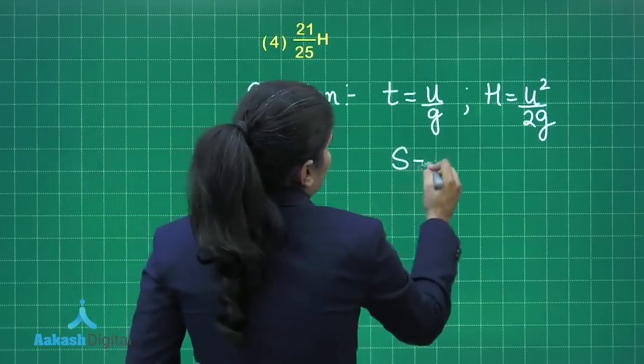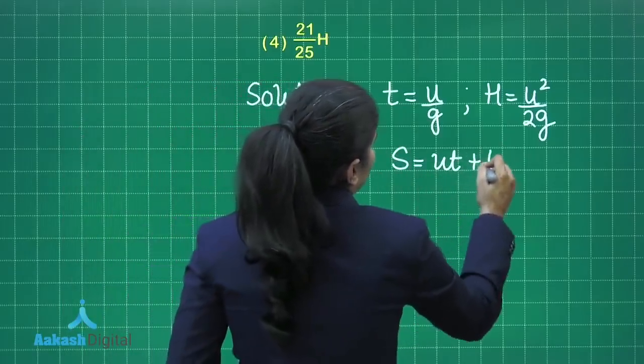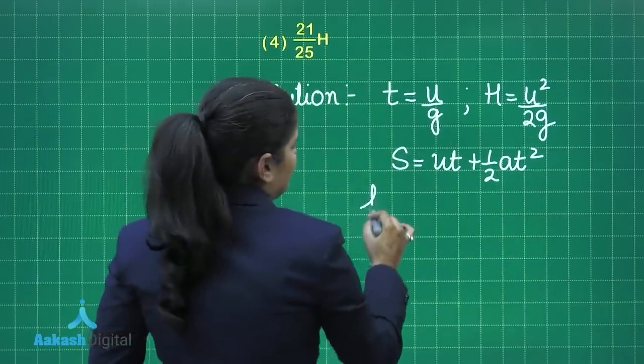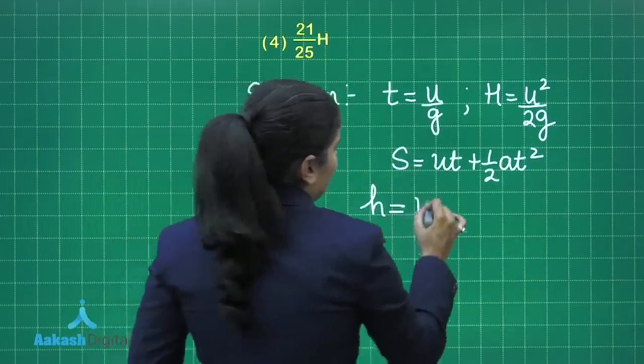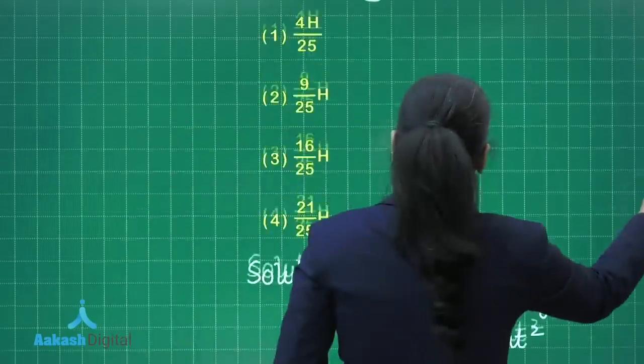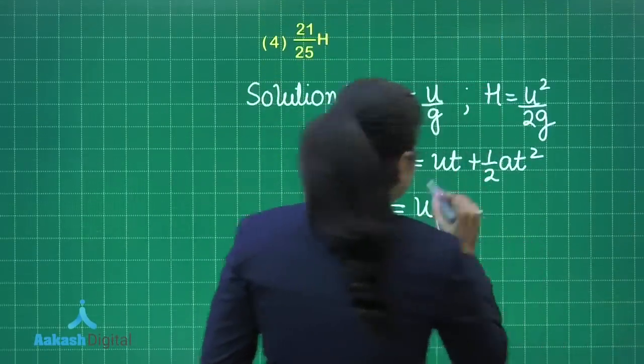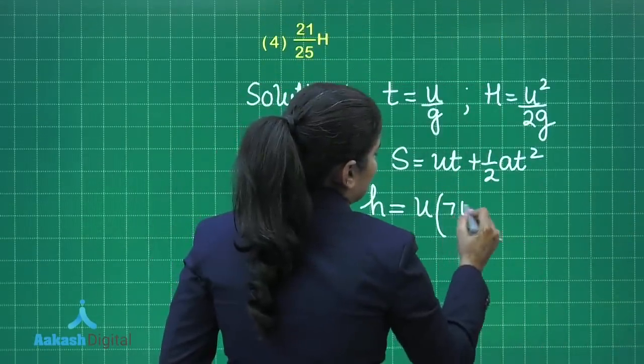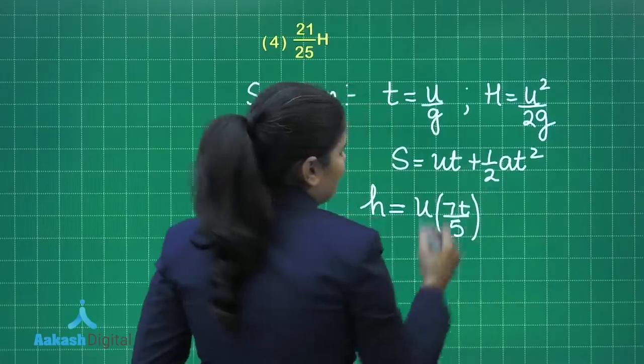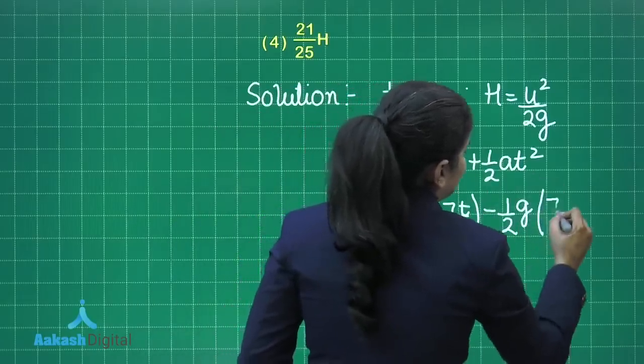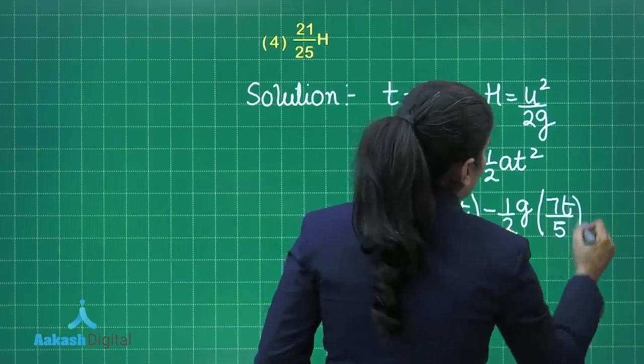I can apply the equation s equals Ut plus half at square, and if I just take this to be small h, that will be U. Instead of t, we need to substitute 7t by 5. So I am just going to write it as 7t by 5, and this will be minus half g times 7t by 5 whole square.